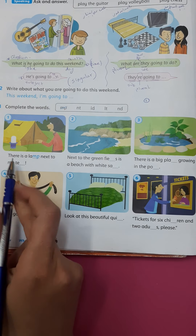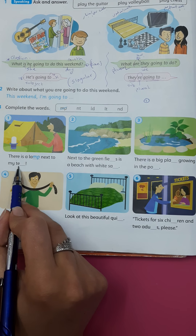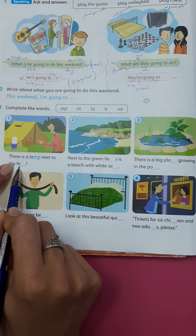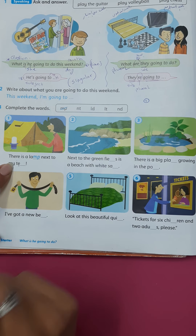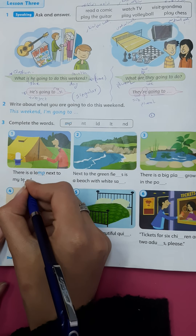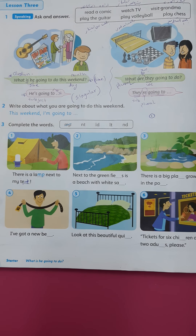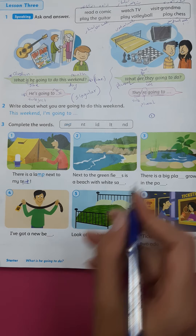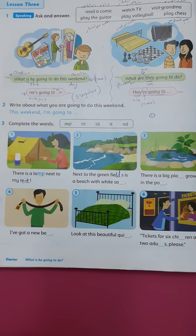Number 1: There is a lamp next to my... my what? My tent. Tent — which means khayma. Number 2: Next to the green field is a beach with white sand.